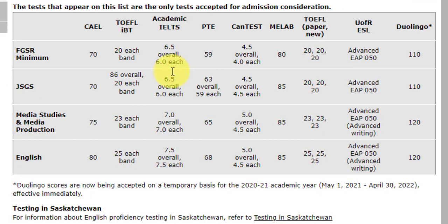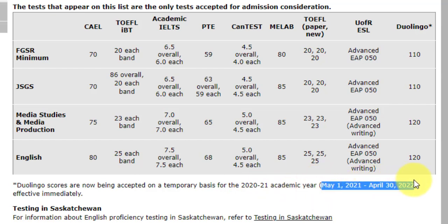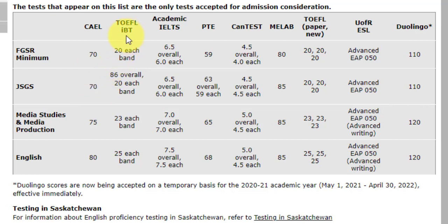If you don't fit into the exemption list, you need to provide proof of English language proficiency. They accept many tests: CAEL (minimum 70), TOEFL IBT (86 overall with 20 in each band), IELTS (6.5 overall with 6 in each section), PTE (63 with 59 in subsections), CANTEST (4.5 with 4.5 in each band), MeLab (85), and Duolingo (110), which is accepted on a temporary basis until April 30th, 2022.